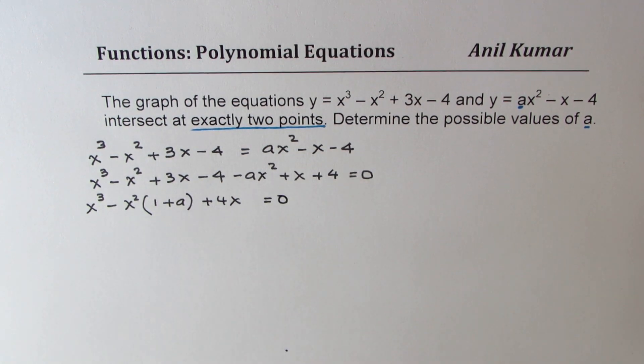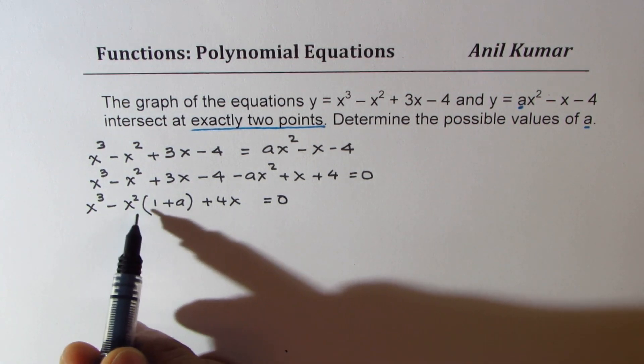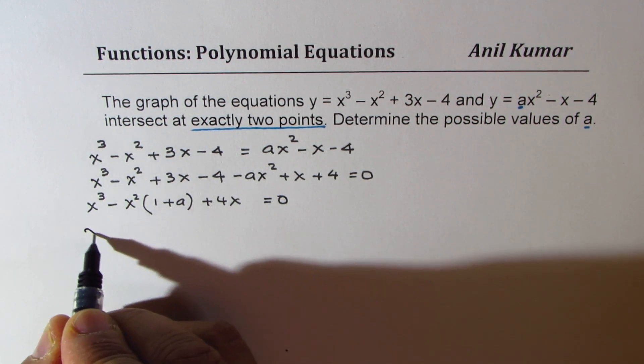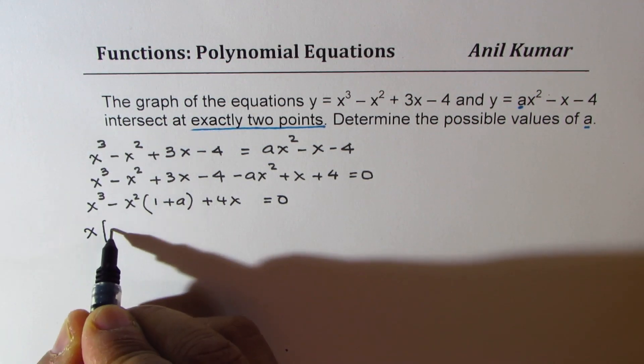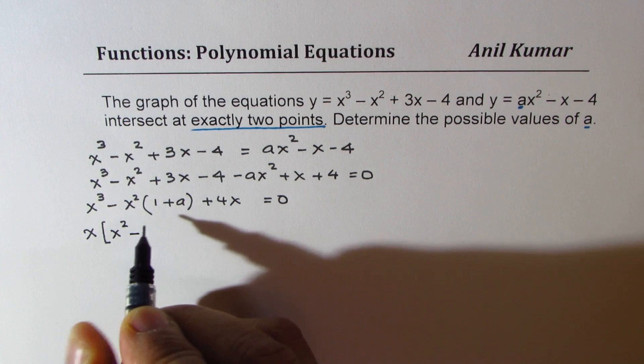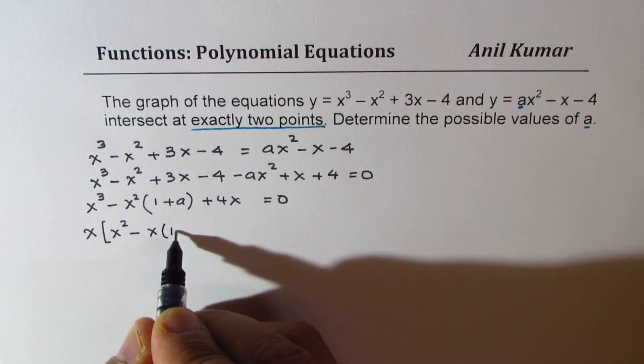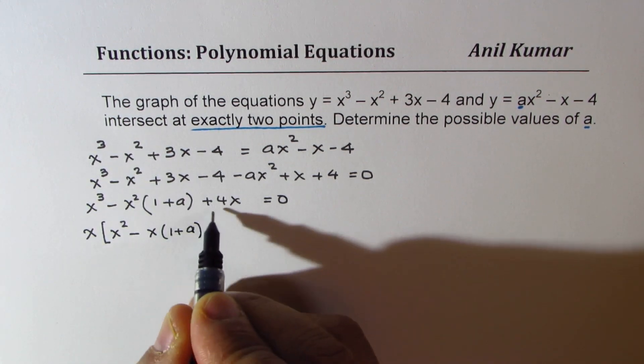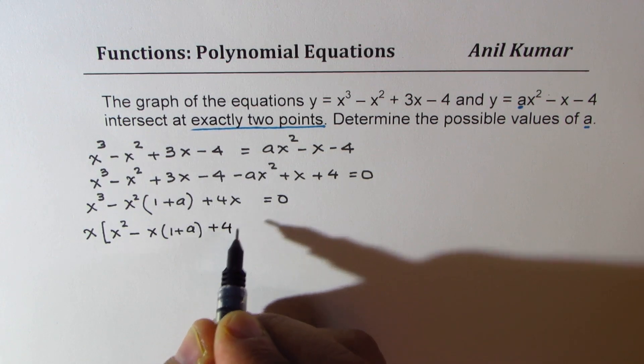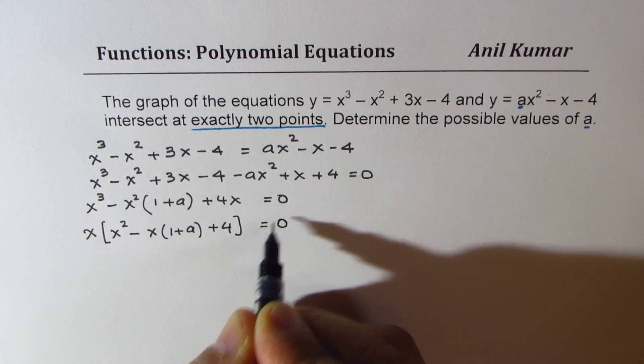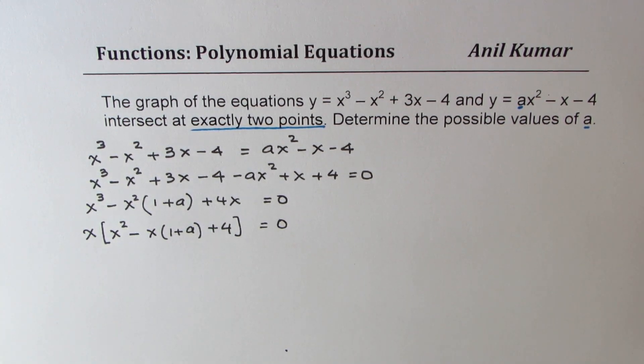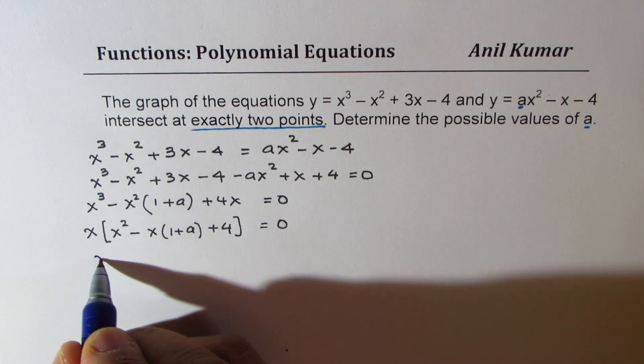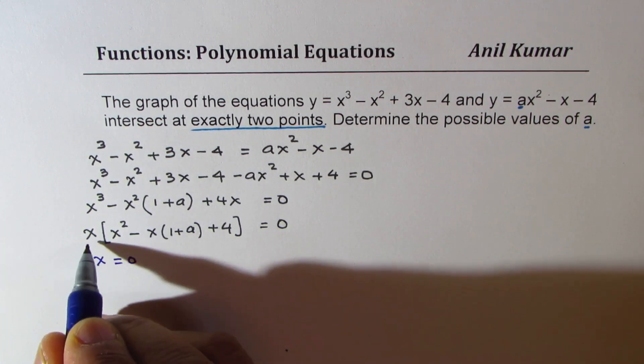For x terms, 3x plus x is 4x, we get 4x. Minus 4 and 4 cancel, so we have this as 0. Now we can take x common, so you get x squared minus x times 1 plus a plus 4 equals 0.